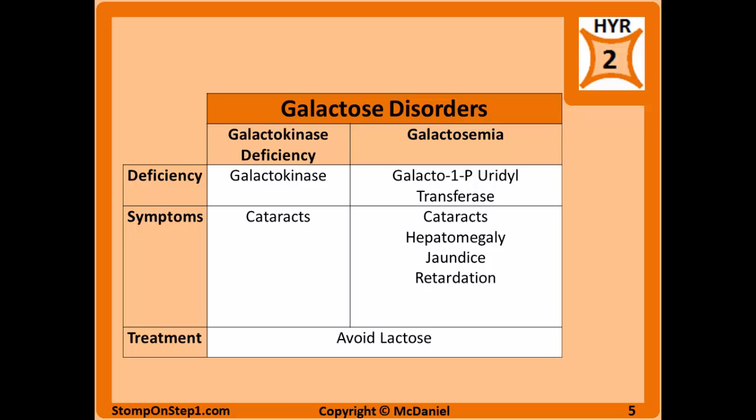Galactosemia is a bit more severe. It's a deficiency of galactose-1-phosphate uridyl transferase, which is the second enzyme in that pathway. It can cause cataracts just like galactokinase deficiency, but can also cause jaundice, hepatomegaly, and mental retardation. Again, the treatment is avoiding lactose and galactose.